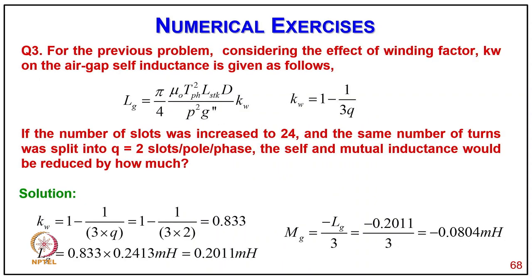Numerical problem 3: for the previous problem, considering the effect of winding factor Kw on air gap self-inductance, given LG = (π/4)·μ0·TpH²·LSTK·D·Kw / (P²·G''), where Kw = 1 − 3/(3Q). If the number of slots is increased to 24 with the same number of turns split into 2 slots per pole per phase, Kw = 1 − 3/(3×2) = 0.833. Therefore LG = 0.833 × 0.2413 = 0.2011 H and MG = −LG/3 = −0.0804 H (milli-Henry).